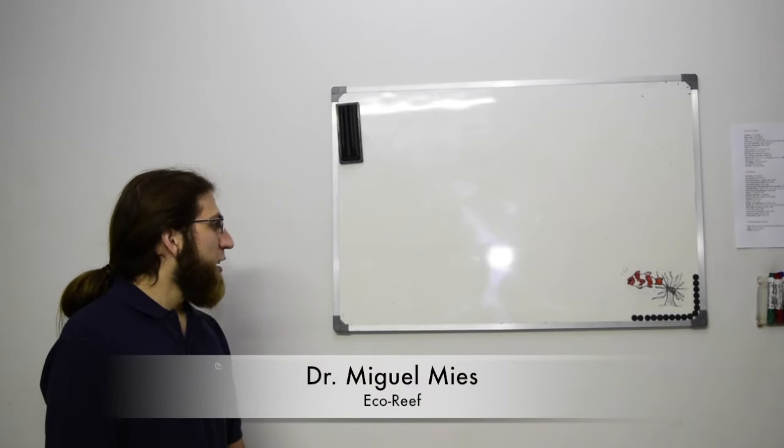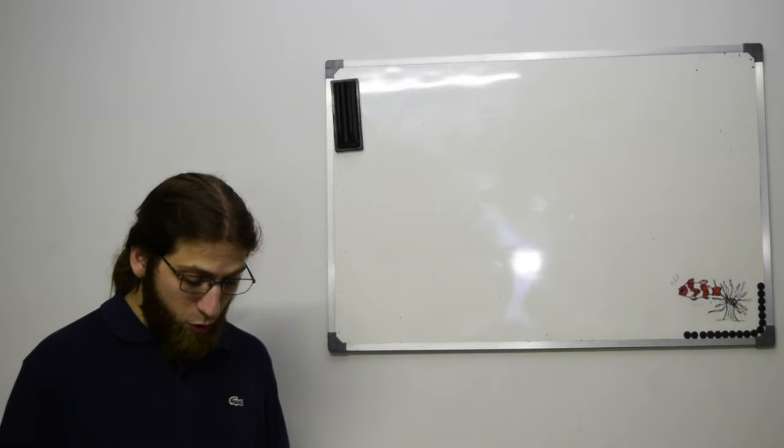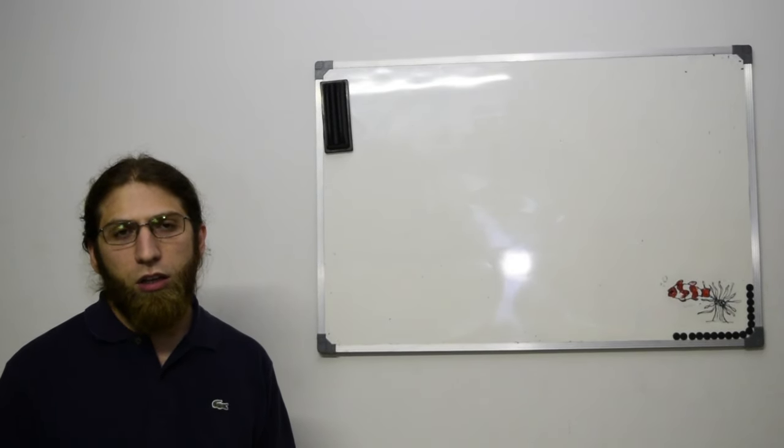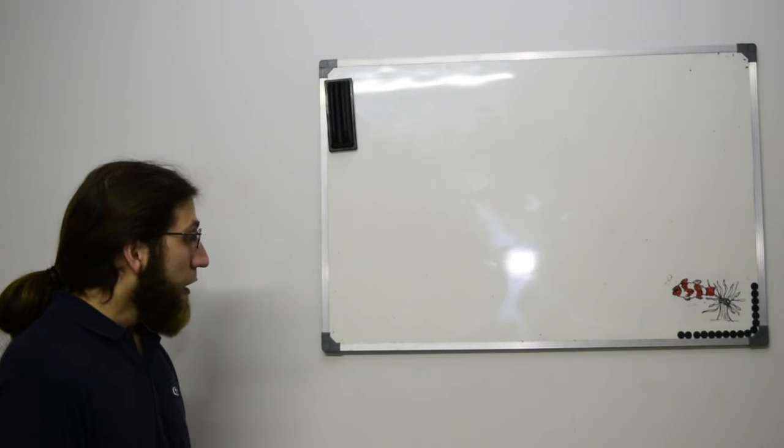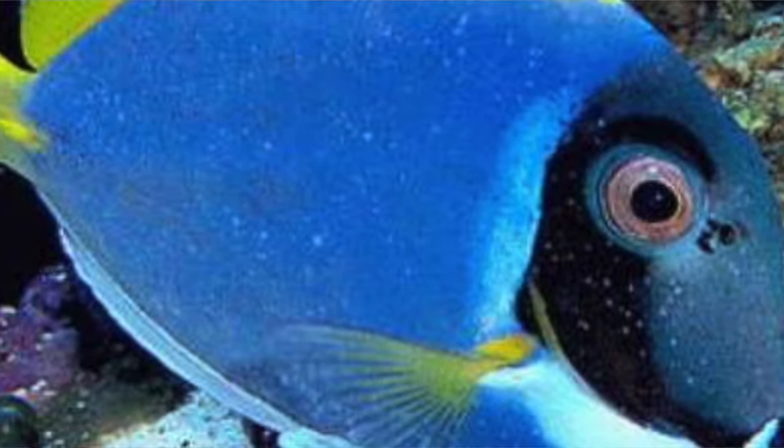Pessoal da Rita Marina, tudo bem? Estamos aqui com o tâmite e ele pediu para que eu explicasse para vocês como é que é o ciclo de vida dos principais patógenos dos peixes de água salgada. E aqui eu vou mostrar como é que funciona o caso do odinium. Na verdade chama-se amilodinium.